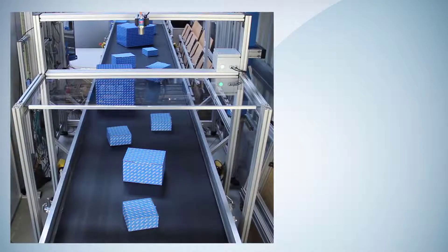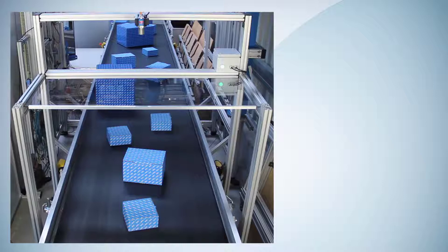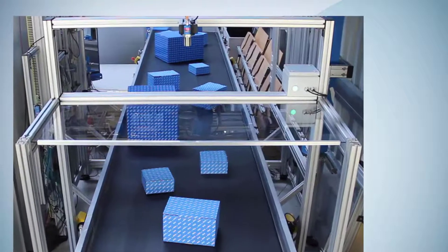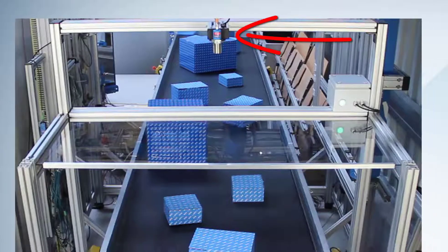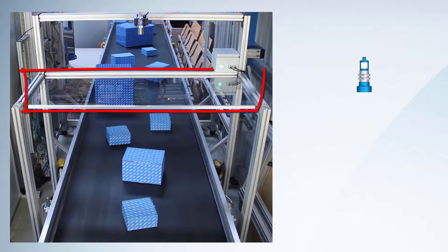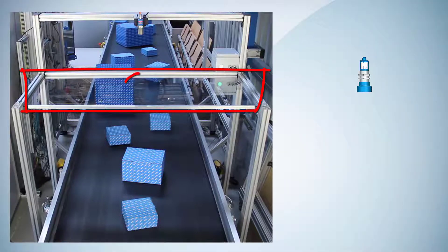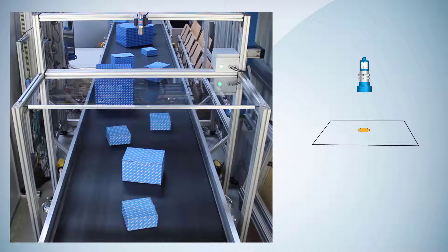In our application model we want to detect packages below acrylic glass and measure their distances to determine their heights. Here we have mounted the sensor. Here you can see the acrylic glass with a hole in the middle through which the sensor will look. Below is the conveyor belt with the packages passing by.